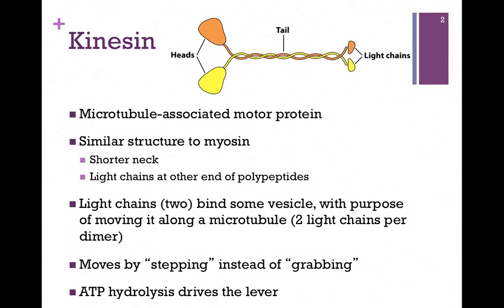With myosin, our target protein was actin, and it has a different role within the cell. If we look at the figure at the top of the screen here, we see that the structure is very similar to that of myosin. For each of the monomers, we have a globular head, we have a straight neck region, and an alpha helical tail, and then those tails form a coiled-coil interaction to form our fundamental unit, the dimer.